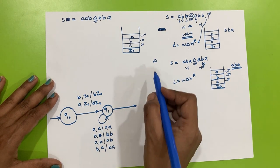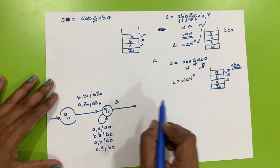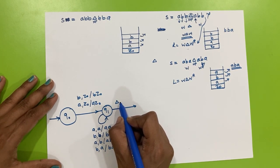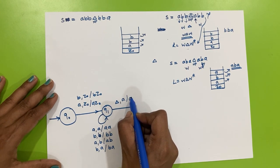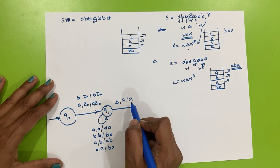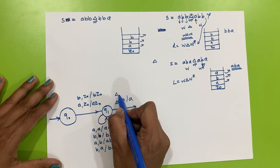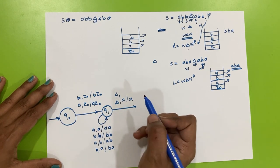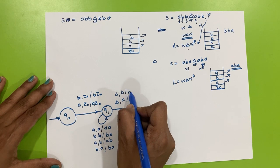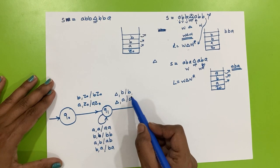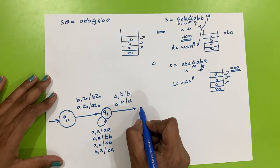In state q1, we continue pushing: input a with stack top a → push a; input b with stack top b → push b; input b with stack top a → push b onto stack. This continues for all combinations, since until we encounter △ we must push whatever the input symbol is, regardless of the stack top.